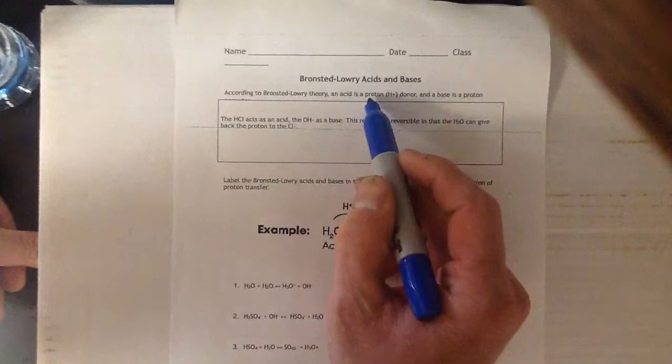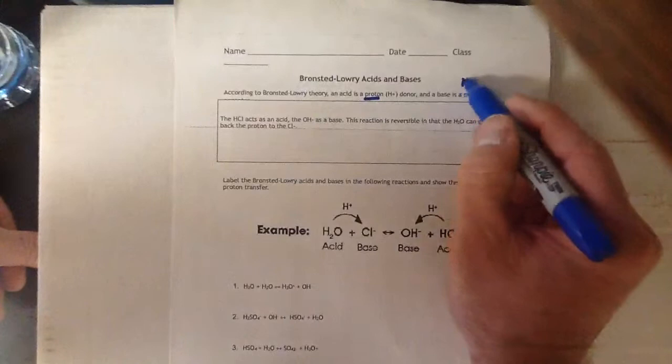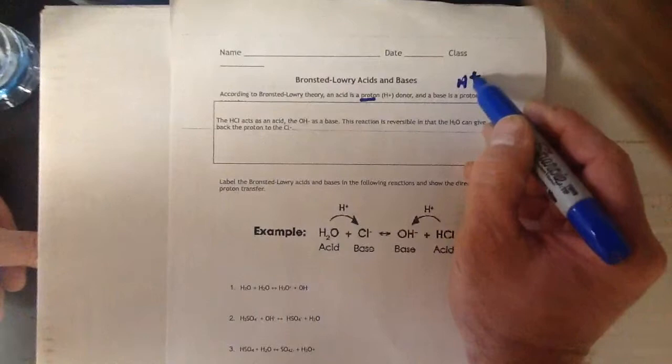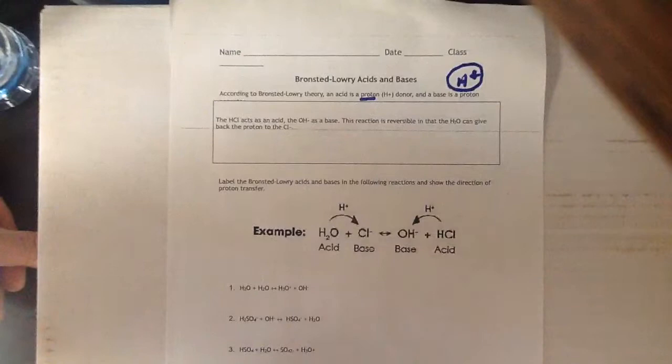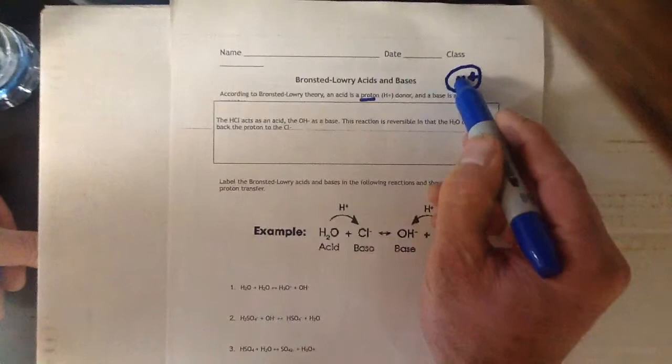According to the Bronsted-Lowry theory, an acid is one that donates a proton. Protons are the hydrogen atom minus its electrons. The Bronsted-Lowry theory considers this like currency, instead of cash, in acid-base reactions.